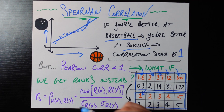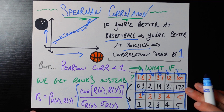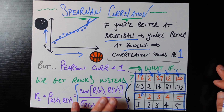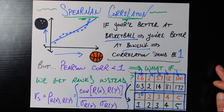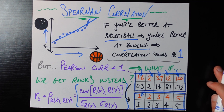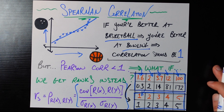The formula is exactly the Pearson correlation we already know: the covariance of the two variables divided by their standard deviations — except here it's the covariance of their ranks divided by the standard deviations of their ranks. It is still bounded between negative one and one, because at the end of the day it is a Pearson correlation, just applied to ranks instead of raw values.